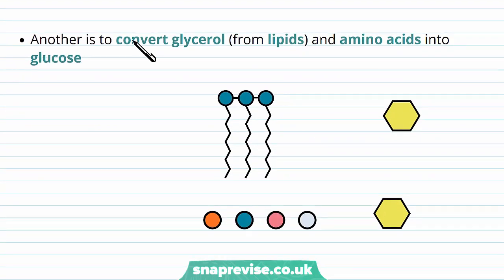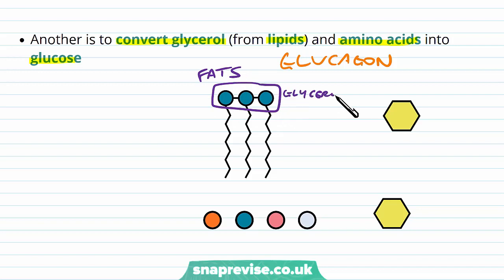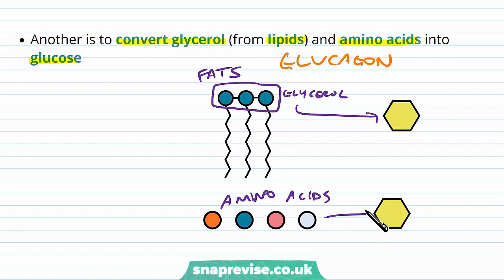Glucagon can also encourage the conversion of glycerol, which comes from lipids, and amino acids both into glucose. So via the action of glucagon, we can turn fats — specifically the glycerol part — into glucose. And we can also turn amino acids into glucose too, again raising the blood glucose concentration.